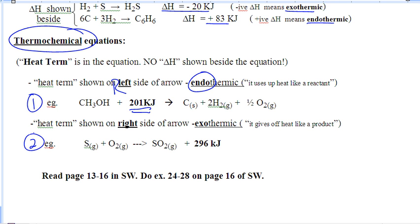Input of energy means endothermic. In example number two, the heat term is on the product side. It means it released 296 kilojoules of energy. That's exothermic.